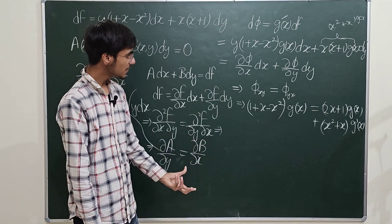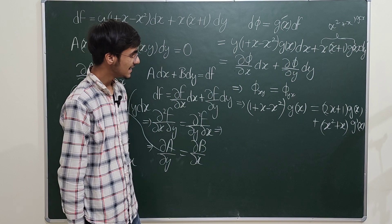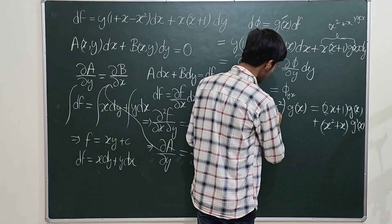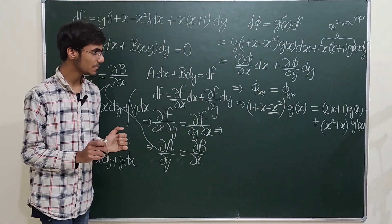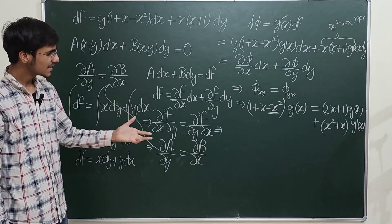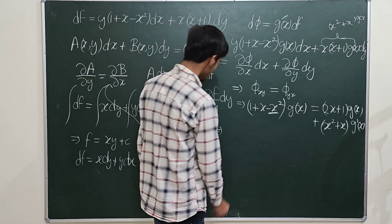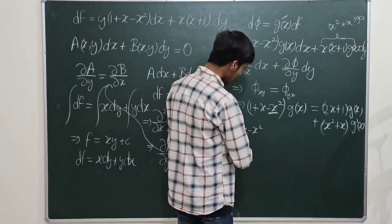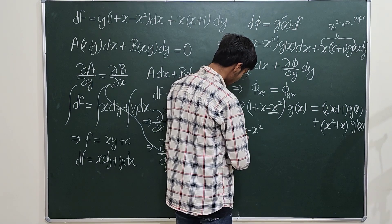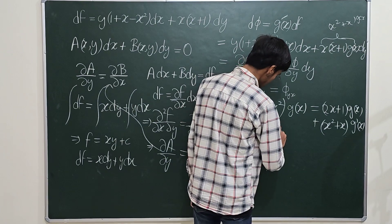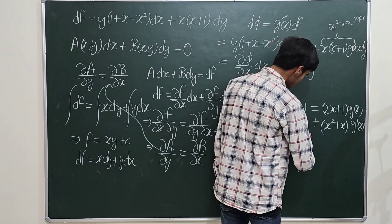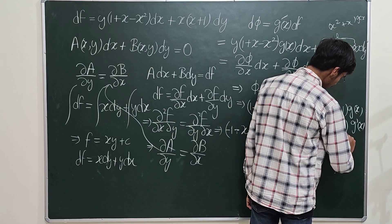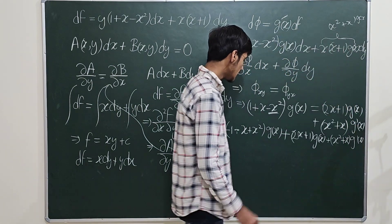Arranging the terms, you get a differential equation involving g(x) and g'(x). Importantly, this equation contains only the one independent variable x — no other independent variable — so it is an ordinary differential equation, which we hope is much simpler than the original equation.